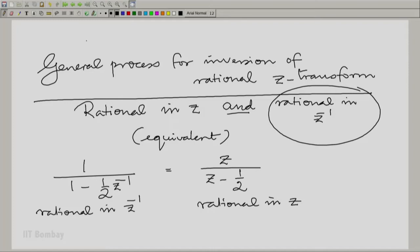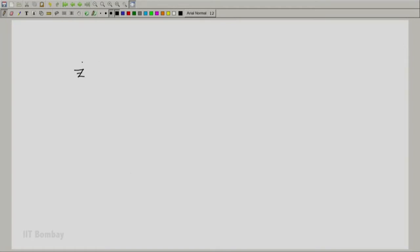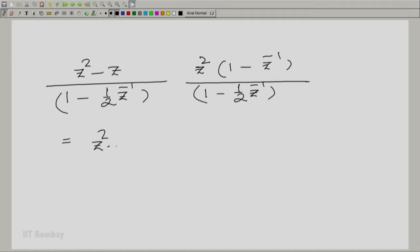For example, even if you had something like Z squared minus Z divided by 1 minus half Z inverse or whatever it is, you would force it to become a rational function of Z inverse. That can be done very easily. You can take Z squared common from the numerator and write 1 minus Z inverse divided by 1 minus half Z inverse. So this can be written as Z squared times the rational function in Z inverse.